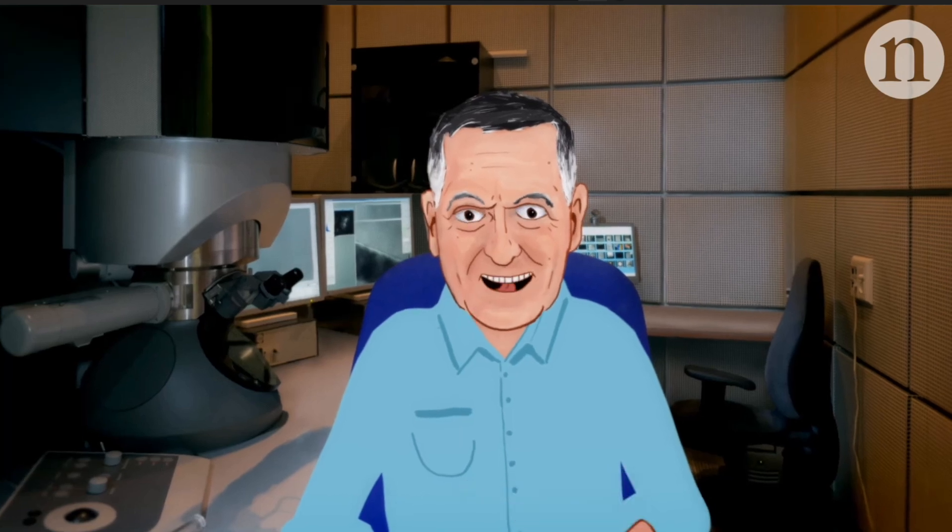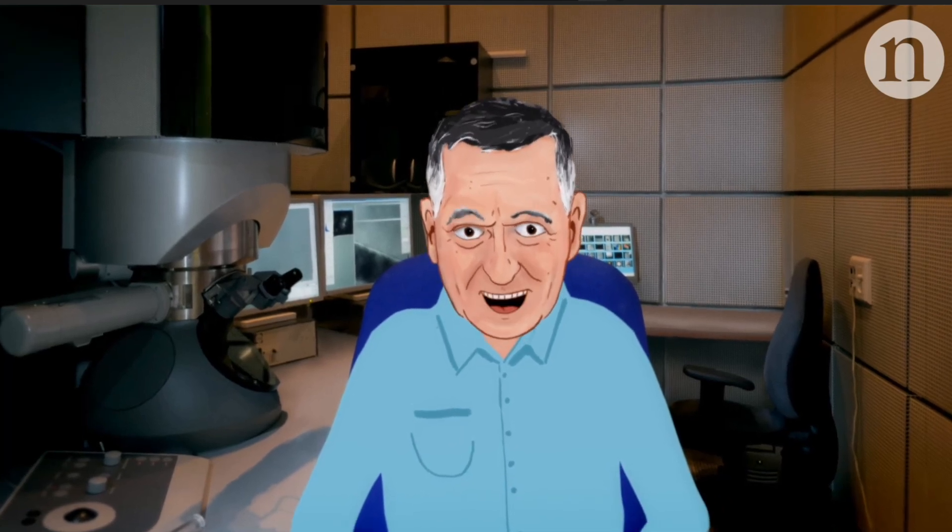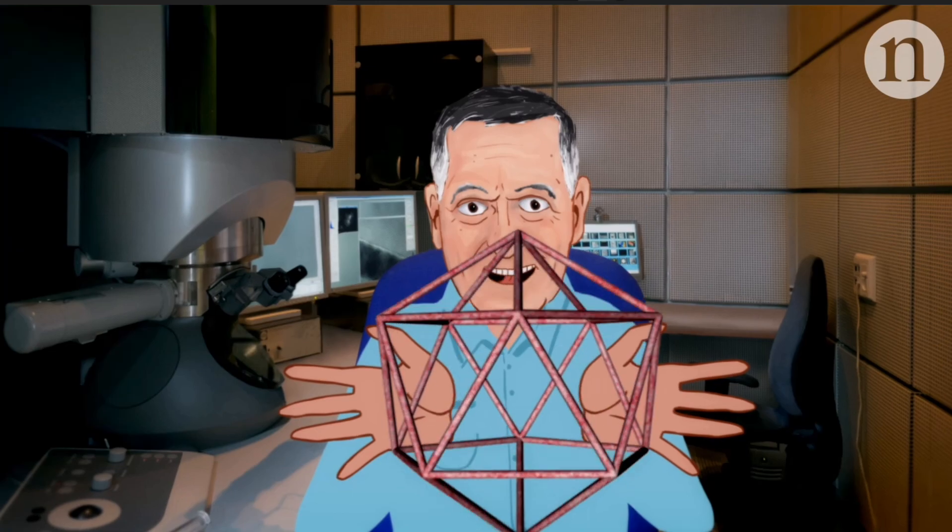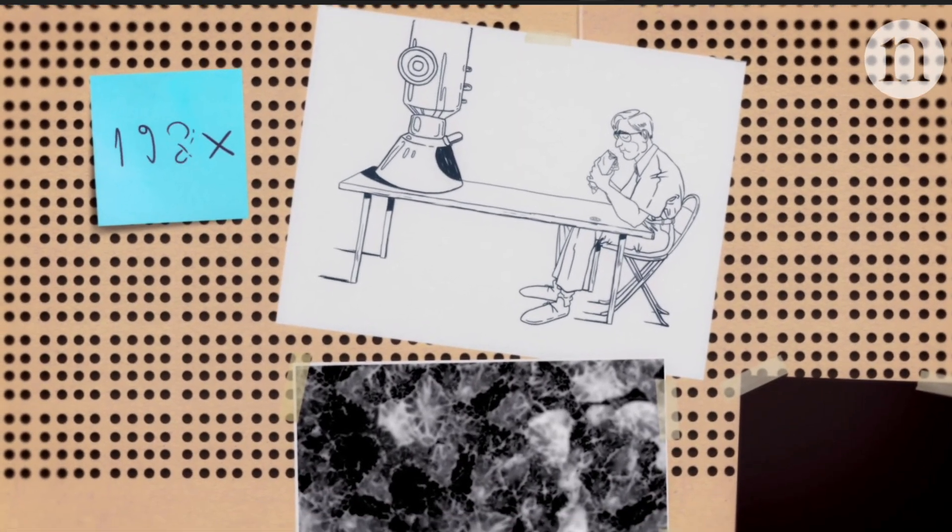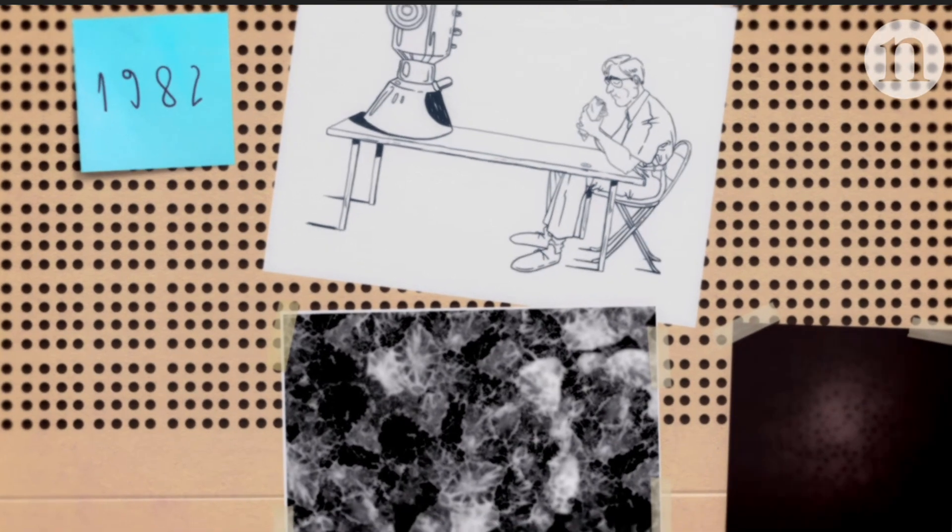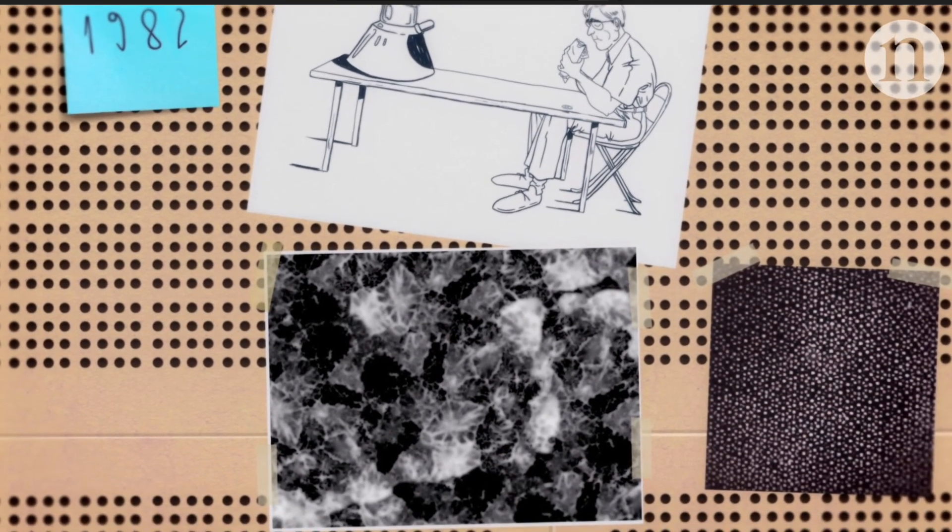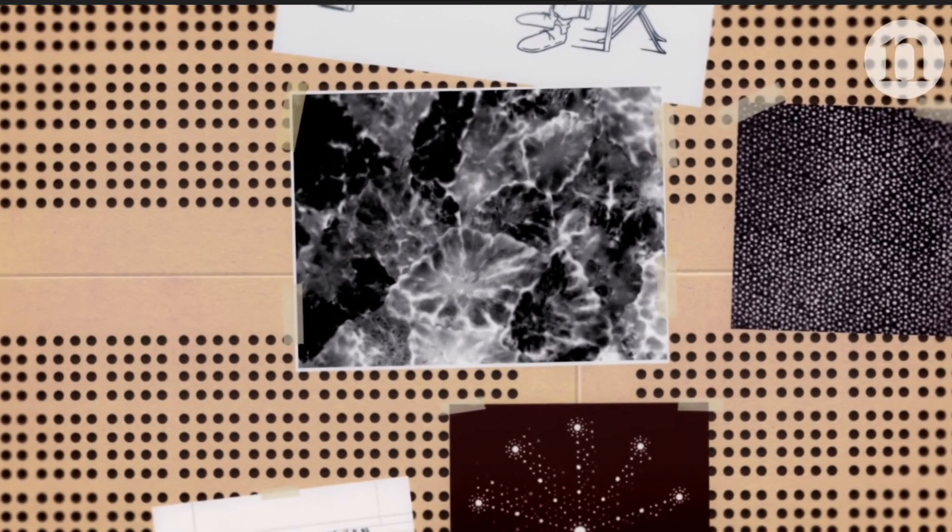So two-dimensional penrose, three-dimensional are quasi-periodic crystals. So the year was 1982. And after lunch, I put aluminum 25% manganese into the microscope and started to look at it.